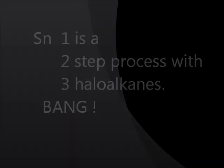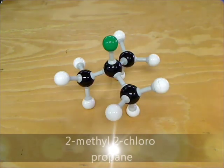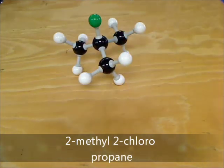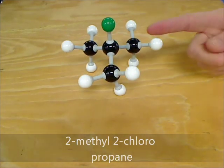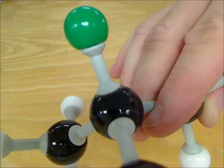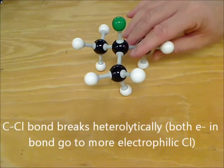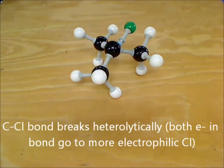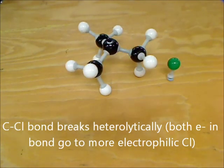So here's the simplest tertiary haloalkane. This bond here is going to break. The two electrons in the bond are going to be attracted towards the chlorine to make a chloride ion. And that chloride ion will fall off, leaving a positive ion behind.